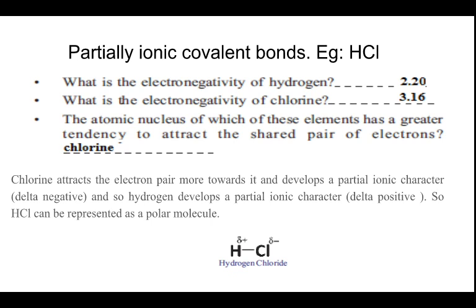Now, a partially ionic covalent bond — an example is HCl. The electronegativity of hydrogen is 2.20 and the electronegativity of chlorine is 3.16. Chlorine has a greater tendency to attract the shared pair of electrons. The chlorine attracts the electron pair more towards it and develops a partial negative charge, while hydrogen develops a partial positive charge. So HCl can be represented as a polar molecule, as shown below.